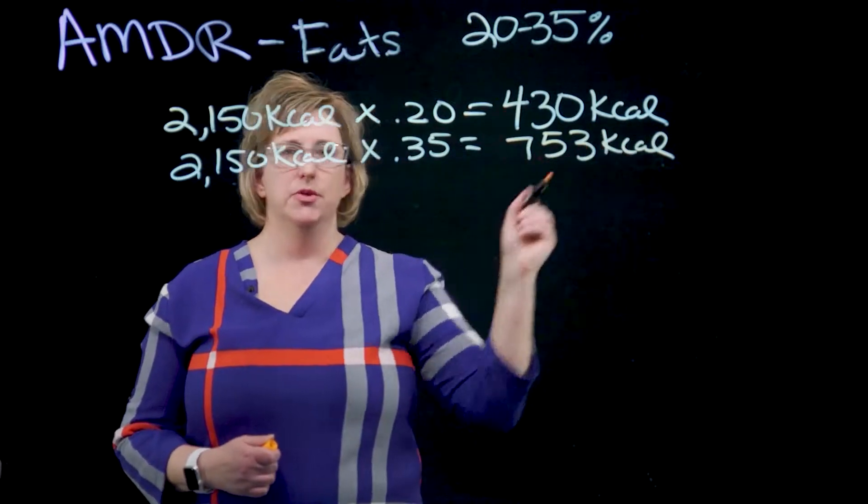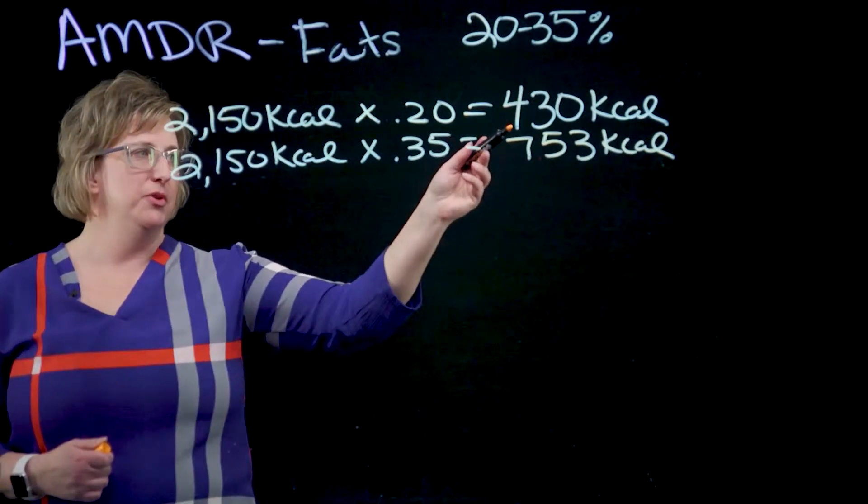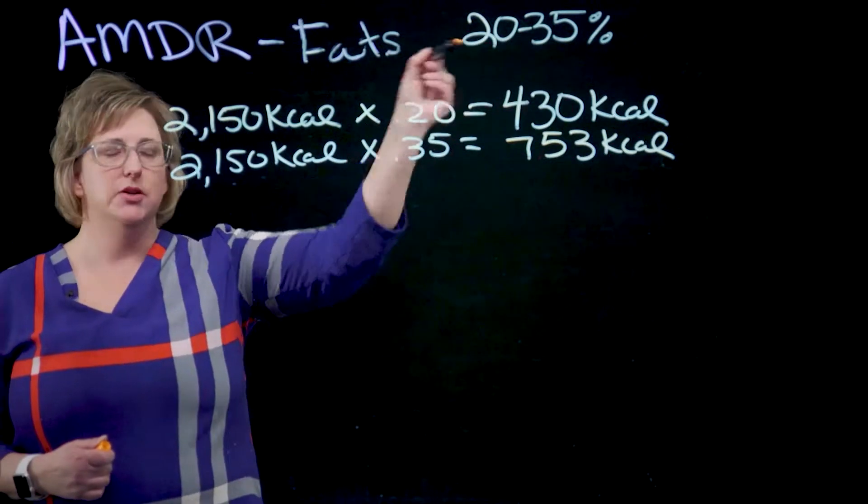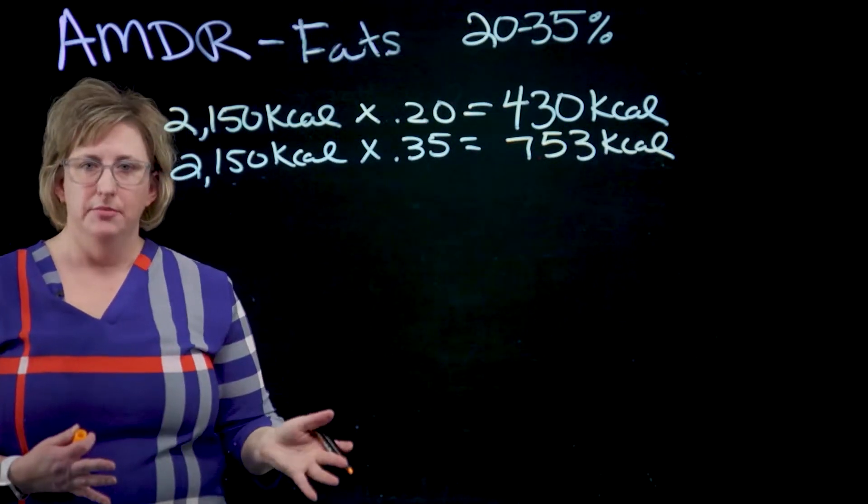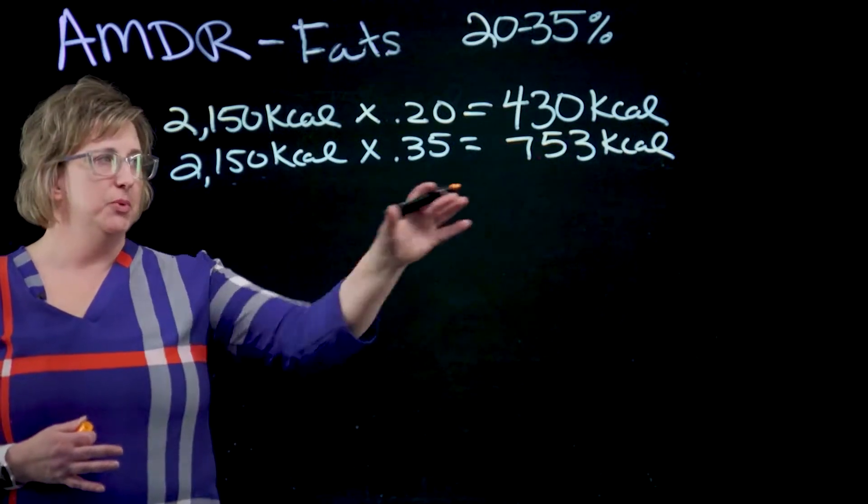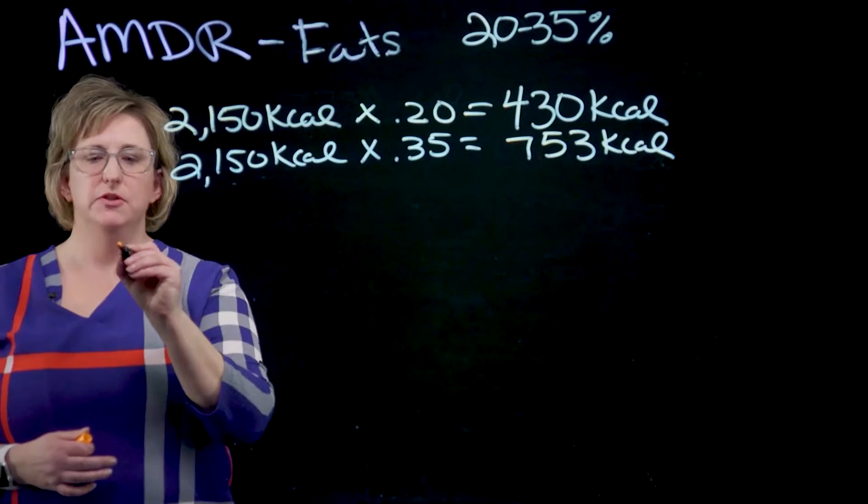So now we know this person needs anywhere from 430 to 753 kcals to give her 20 to 35%. But again, most people don't look at the calories, they look at the grams. So if we're going to put this in a gram form, what do we have to do?